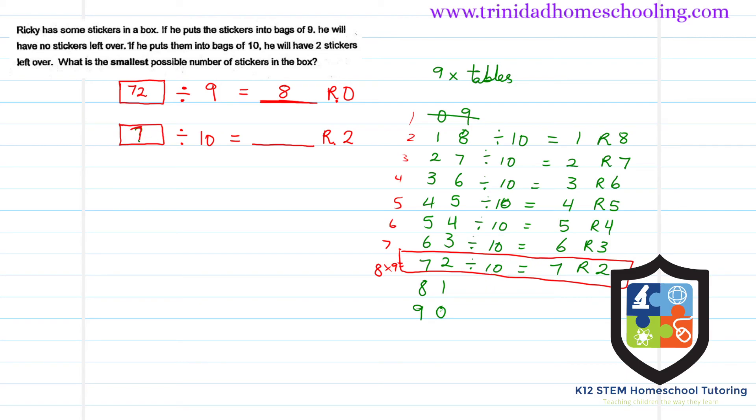If we divide seventy-two by ten, we have seven tens and a remainder of two. So the smallest possible number of stickers in the box will be seventy-two.